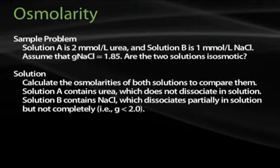Sample problem: Solution A is 2 millimoles per liter urea, and solution B is 1 millimole per liter NaCl. Assume that G for NaCl is 1.85. Are the two solutions iso-osmotic? To solve, calculate the osmolarities of both solutions and compare them.